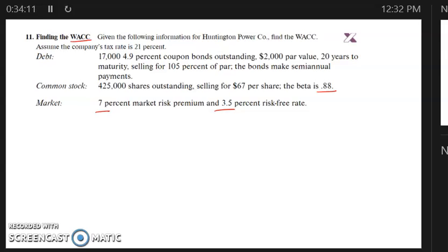So the pre-tax cost of debt. We're just going to calculate the yield to maturity. So N is 20 times 2, that's semiannual, 40.